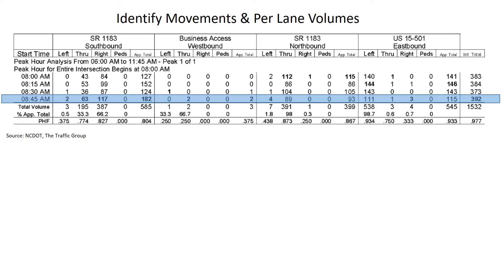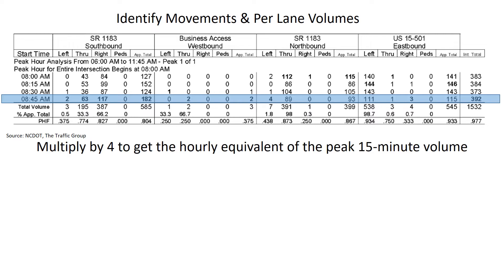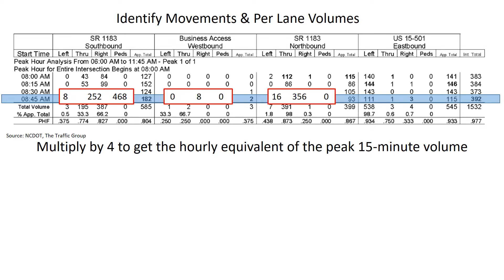Starting with these volumes, our first step is to multiply by four to get the hourly equivalent of these peak 15-minute volumes. We go across the row, multiplying each of those values by four. This gives us an hourly equivalent.